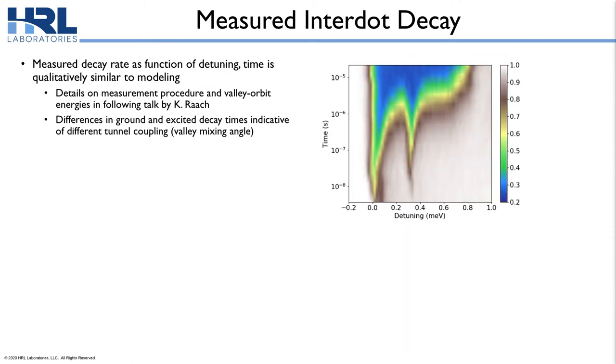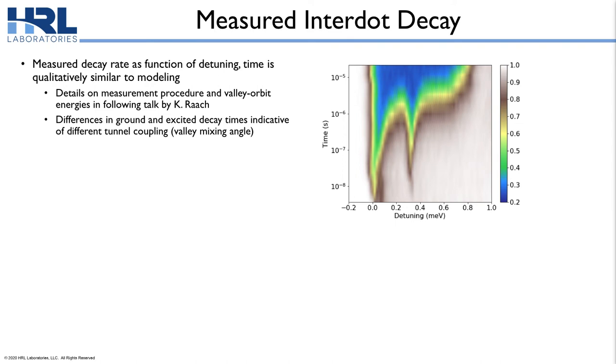To validate this modeling, we can look at the results of a similar dynamic experiment in an actual silicon-germanium dot. As a function of detuning and hold time, we see qualitatively very similar features to those predicted by modeling. For more details on this type of experiment and analysis of splittings, I refer you to my colleague Kate Rock's talk. We observe peaks corresponding to what we believe are the ground and valley excited states in this dot.